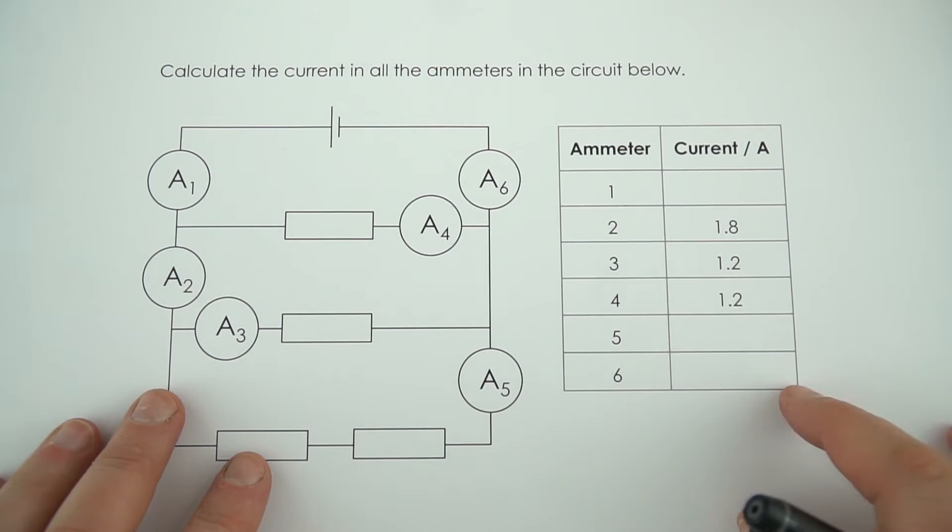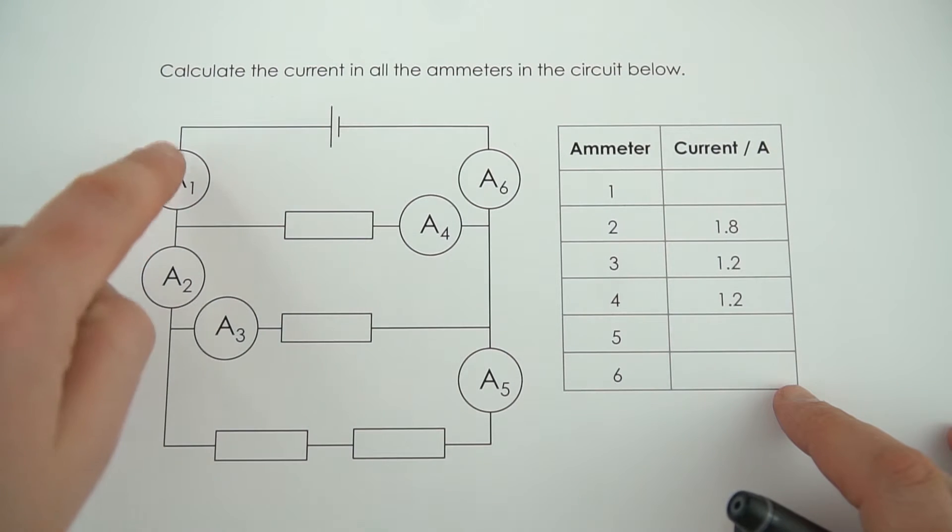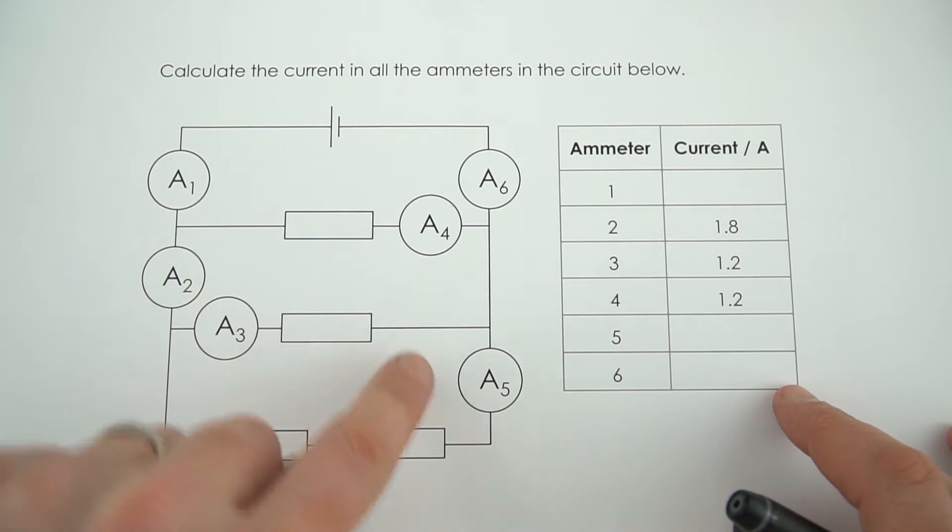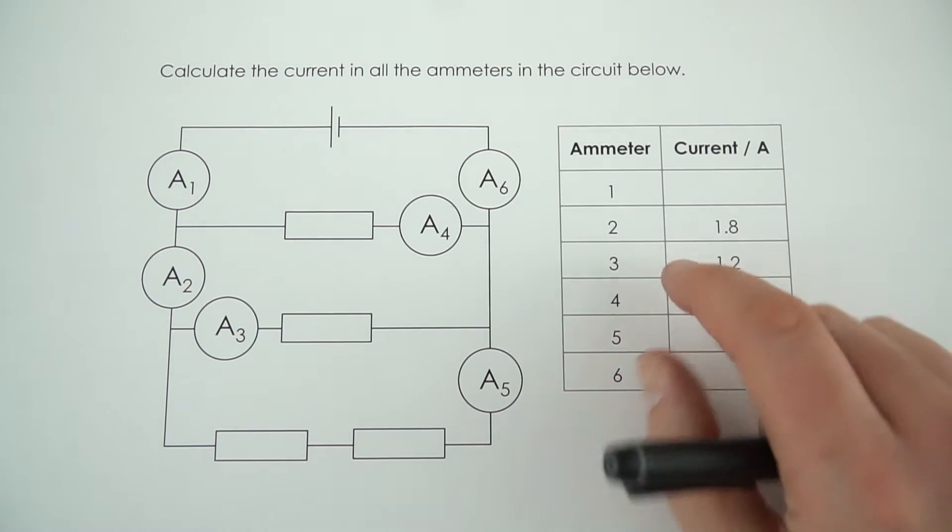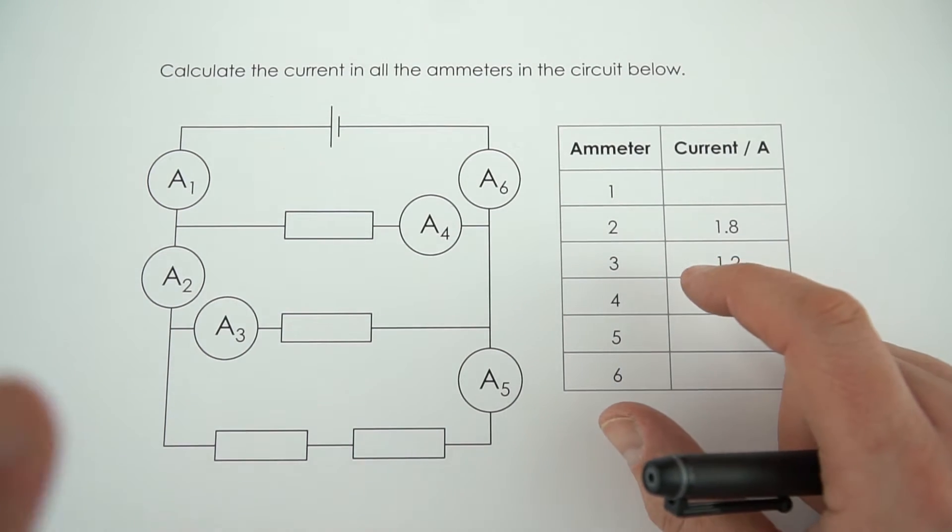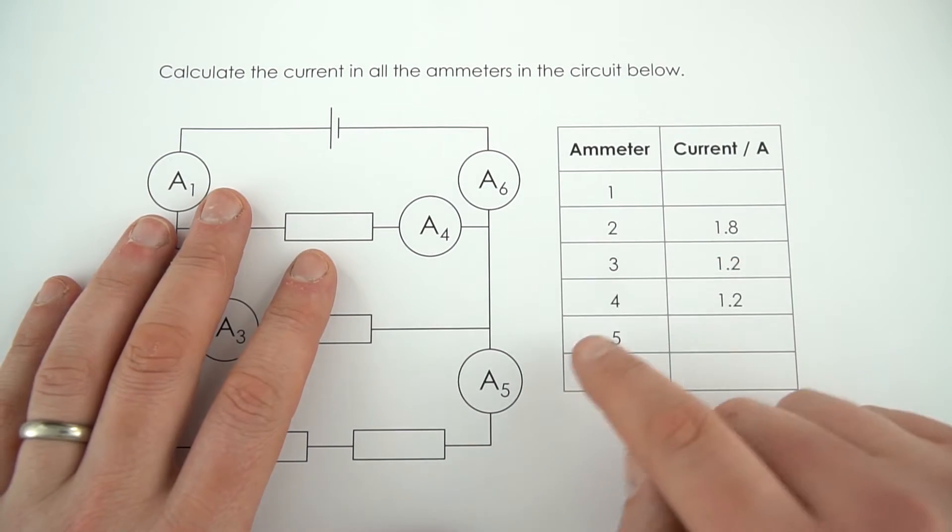At first glance there's a lot going on in this example, but what we need to do is work out the current in each of all of these ammeters. An approach to a question like this is to draw onto your circuit diagram.